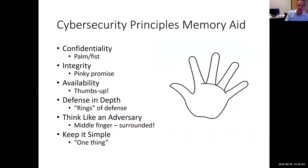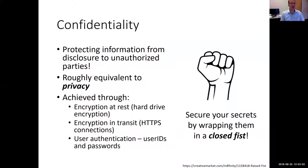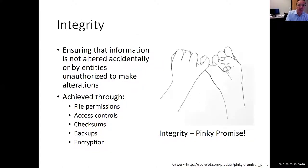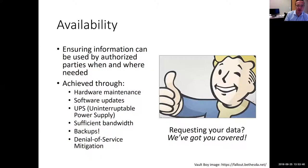Confidentiality: protecting information from unauthorized parties, roughly equivalent to privacy. Memory aid: keep data in a closed fist. Integrity: ensure information is not altered accidentally or in an unauthorized way. Memory aid: a pinky promise. Availability: ensure information can be used by authorized parties when needed. Memory aid: thumbs up — the Fallout video game character. Everything's good to go.